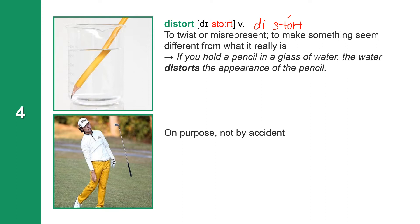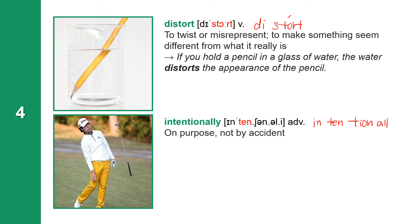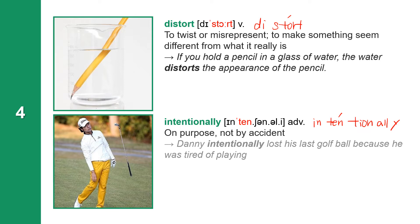The next word means on purpose, not by accident. The word is Intentionally. Intentionally is an adverb and it has five syllables. It means on purpose, not by accident. Danny intentionally lost his last golf ball because he was tired of playing.